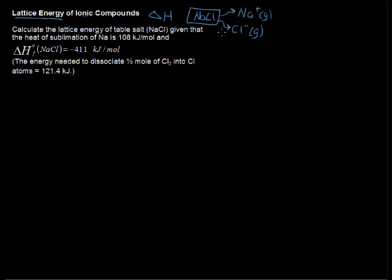The way we find that lattice energy is by going through a Born-Haber cycle. The Born-Haber cycle—not the Bourne Identity, Bourne Supremacy—the Born-Haber cycle with all these chemists.